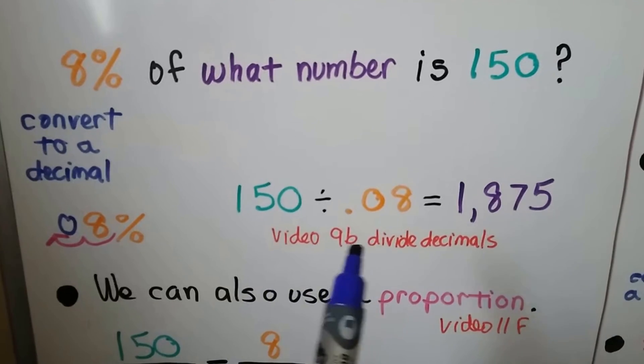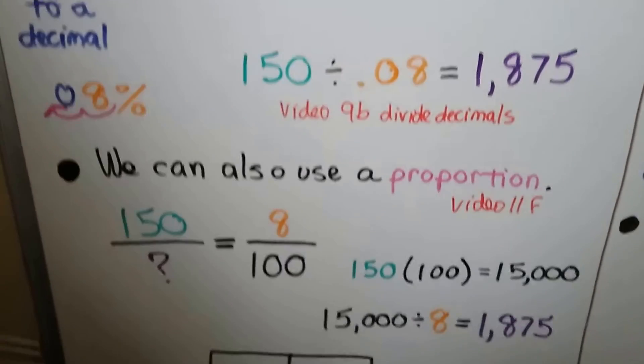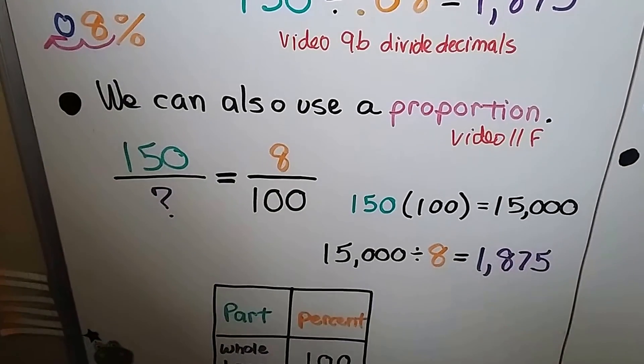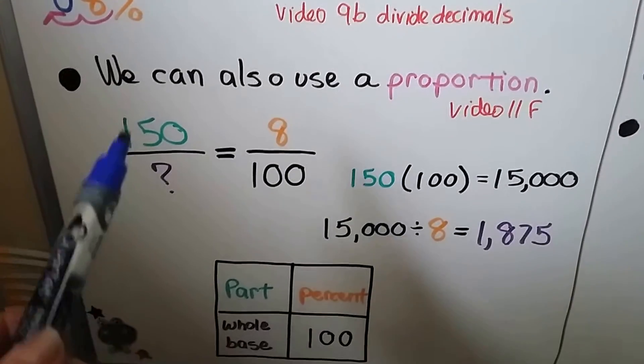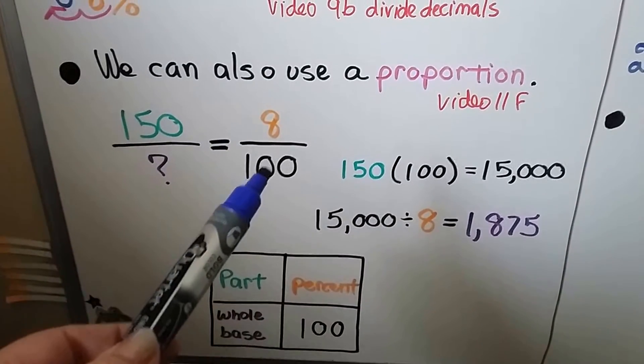If you're doing it on paper, we learned how to do that in video 9b. We can also use a proportion. We learned that in video 11f. We set it up so that this is the part. This is the base or the whole. That's the percentage, and we write it over 100.